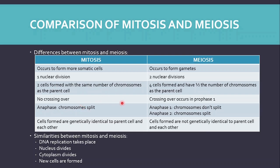No crossing over happens in mitosis, but there is crossing over in prophase I of meiosis. During anaphase of mitosis the chromosomes split, whereas in meiosis during anaphase I the chromosomes do not split — each chromosome of the homologous pair is pulled into the new cells. But in anaphase II the chromosomes do split into chromatids. Similarities between mitosis and meiosis: DNA replication takes place, the nucleus divides (karyokinesis), the cytoplasm divides (cytokinesis), and new cells are formed.